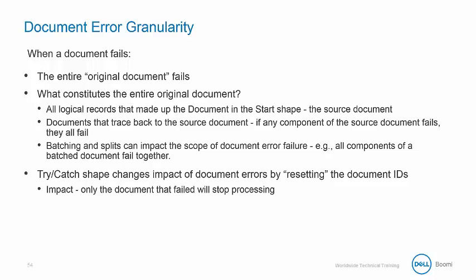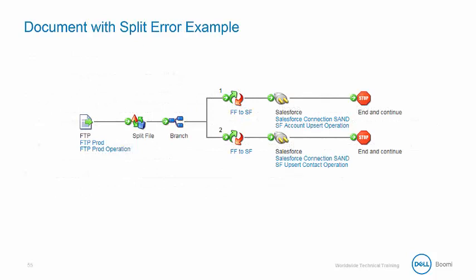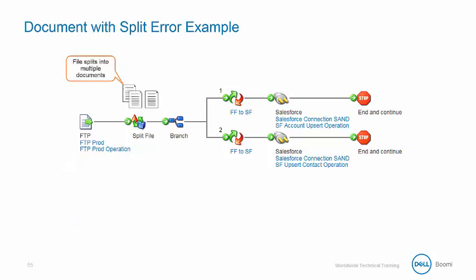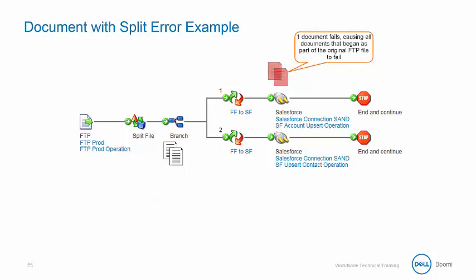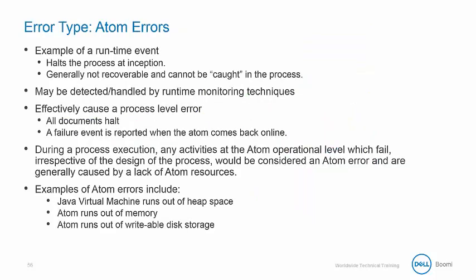The try-catch shape changes the impact of document errors by resetting the document IDs, so only the document that failed will stop processing. Now let's look at an example where we have an error when a document is split. A single batch document with two records is retrieved into the process. The document is split by the data process shape into two documents. The documents are copied at the branch shape. The first set of documents flow down the first branch to the Salesforce connector and one document fails, but this time all documents that were from the original document fail, so even the copied set of documents waiting at the branch shape will fail.